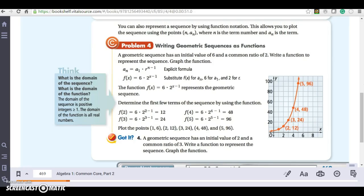Let's take a look at problem 4 now. Writing geometric sequences as functions. It says up here you can also represent a sequence by using function notation. It allows you to plot the sequence in terms of n and a_n, where n is x and a_n will be y or f(x). Where n is the term number and a_n is the term.